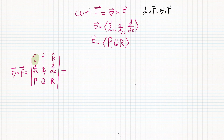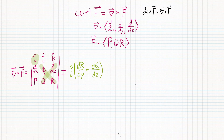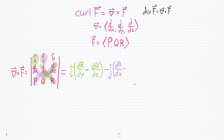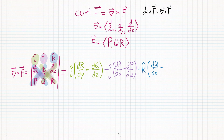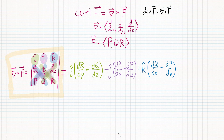Remember, to find the cross product of two vectors, you have to find the determinant of a matrix. The top row of the matrix are the three unit vectors i, j, and k. Then the middle row is the first vector you're going to cross, so that's del. And the bottom row is the last vector you're going to cross, so that's our vector field F. The determinant gives: i-hat times (∂r/∂y − ∂q/∂z), minus j-hat times (∂r/∂x − ∂p/∂z), plus k-hat times (∂q/∂x − ∂p/∂y). This is the full equation for the curl of a vector field, but don't memorize it — it's too complicated, and a lot of the time most of these derivatives are zero. Instead, just remember that the curl is del crossed with F, and know how to take the cross product of two vectors using determinants.